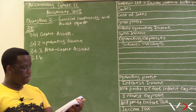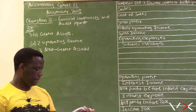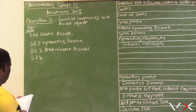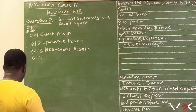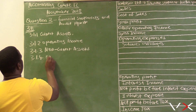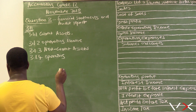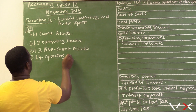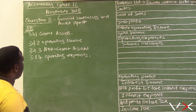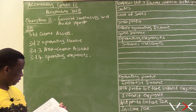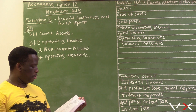For 3.1.4, trading stock deficit refers to stock that has been stolen. That stock is recorded under the trading stock deficit account, and this account is an operating expense. So the answer for 3.1.4 is operating expenses.